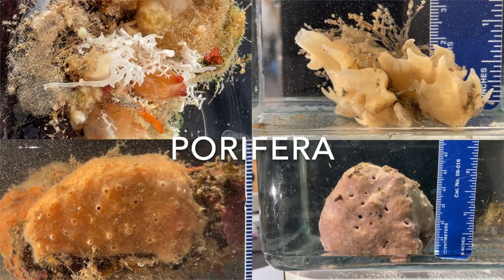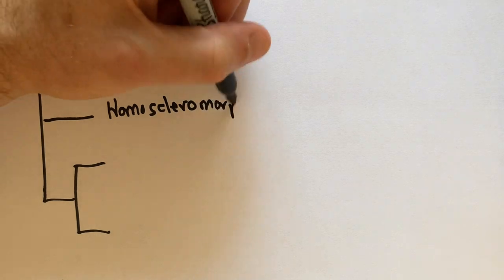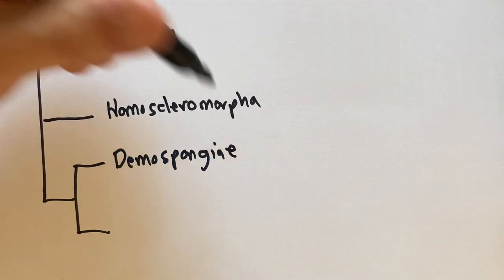This video introduces a little bit of the diversity of sponges, most of them from Southern California. We're going to organize that diversity using this phylogenetic hypothesis and we'll see members of three of these four taxa, starting with Calcarea.